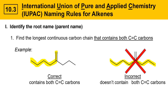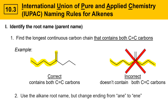Once you've identified the longest carbon chain, use the alkane root name but change the ending from -ane to -ene. In our correct longest carbon chain there are six carbons, so the root name if it were an alkane would be hexane. You just need to remove the -ane ending and replace it with -ene and you get hexene. So that's the root name: hexene.